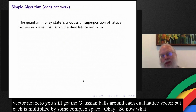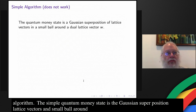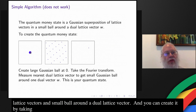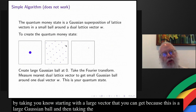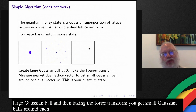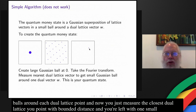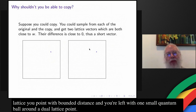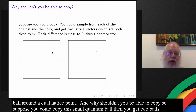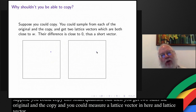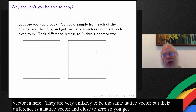So what is the simple quantum money state? The simple quantum money state is the Gaussian superposition of lattice vectors in a small ball around a dual lattice vector w. You can create it by starting with a large Gaussian ball, taking the Fourier transform to get small Gaussian balls around each dual lattice point, and then measuring the closest dual lattice point with bounded distance decoding — leaving you with one small quantum ball around a random dual lattice point. Why shouldn't you be able to copy? Suppose you could copy this small quantum ball — then you get two quantum balls. You could measure a lattice vector in each, and they're very unlikely to be the same. But their difference is a lattice vector close to zero, so you get a short vector. That's why you should not be able to copy.